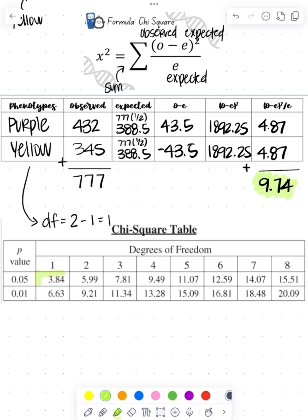We see that we have a degree of freedom of one because I have two different phenotypes. So two minus one is one. Based on the chart I see that my table value of 3.84 is less than my calculated value. So I'm going to reject my null hypothesis.